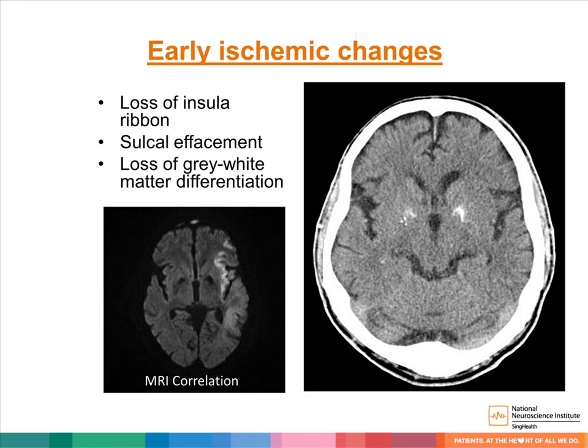Early ischemic changes in the brain parenchyma are demonstrated as swelling, evidenced by sulcal effacement and loss of grey-white matter differentiation. In this example, there is sulcal effacement and loss of grey-white matter differentiation in the left cerebral hemisphere. Of note, there is also loss of the insular ribbon.